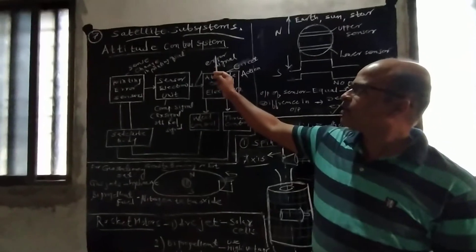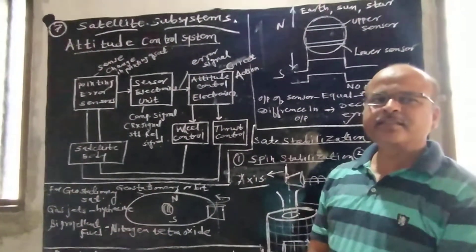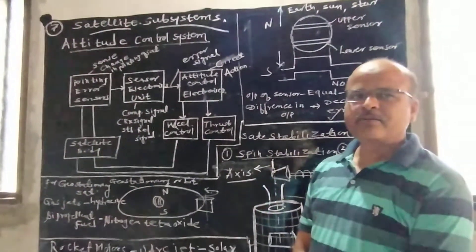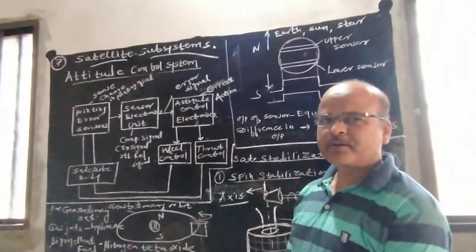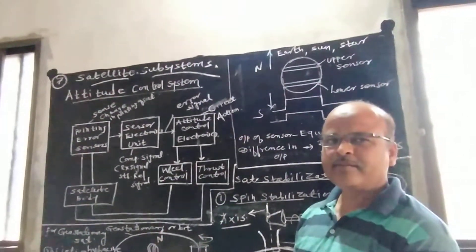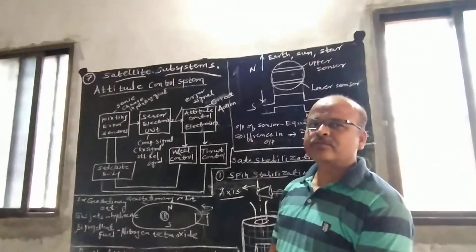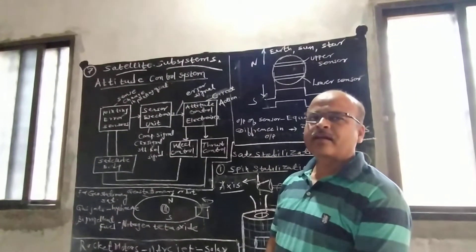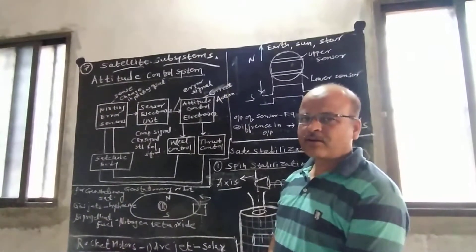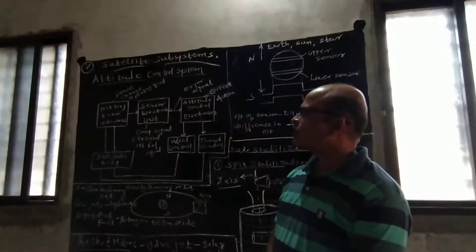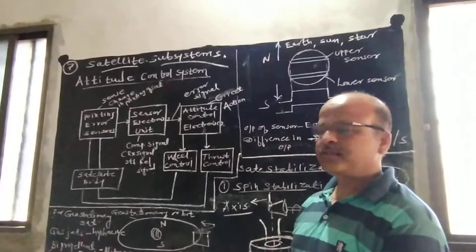First, we will study the Attitude and Orbit Control System. Satellite Attitude and Orbit generally changes due to the different orbital perturbations we have studied in the previous lecture — that is the gravitational effect of sun and moon, oblateness of the earth, sun transit outage, solar eclipse, atmospheric drag, and the effect of internal torque. All this affects the Satellite Attitude and Orbit.